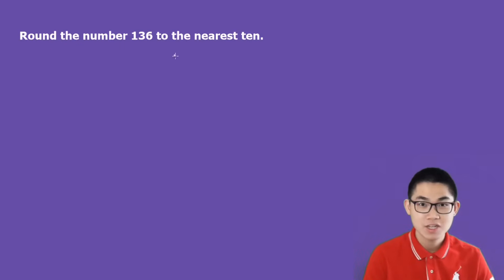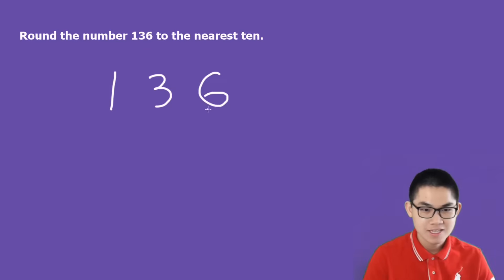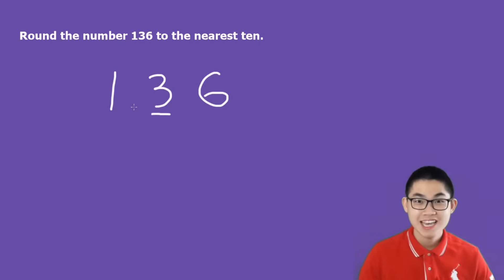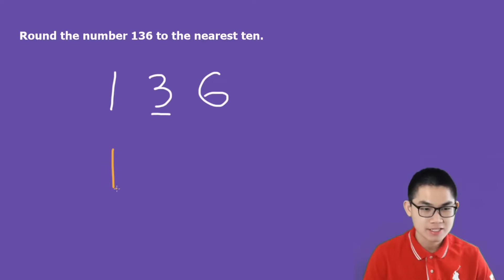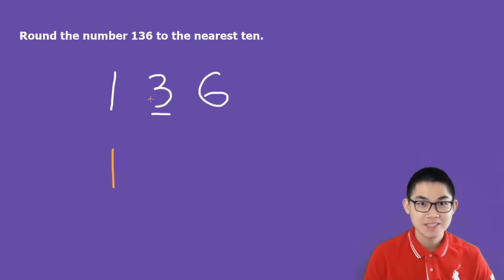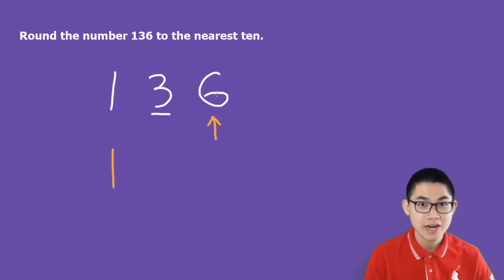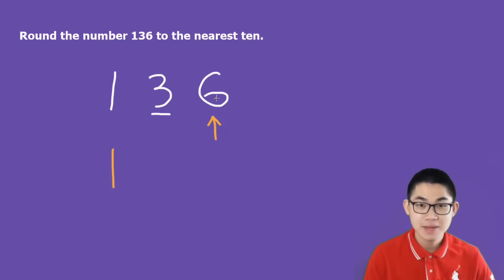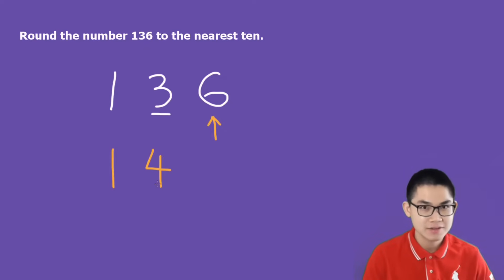Round the number 136 to the nearest ten. So we have this number 136. This is called the ones place, and this is the tens place. So we want to round this number here. All the numbers to the left of 3, we just copy it down. How about 3? Will it stay the same or will it be different? That depends on the number right next to it. So if this number is smaller than 5, then 3 will stay the same. And if this number is greater or equal to 5, then 3 becomes number 4 — we just add it by 1.